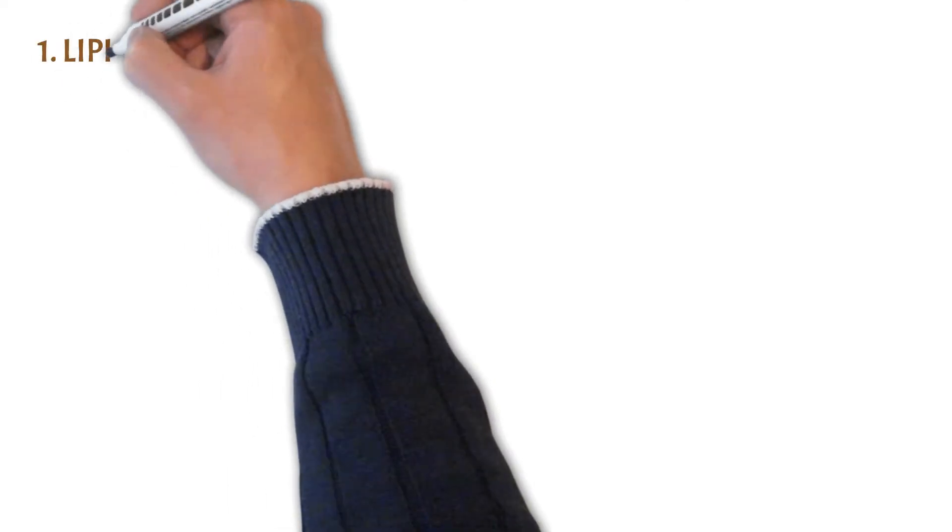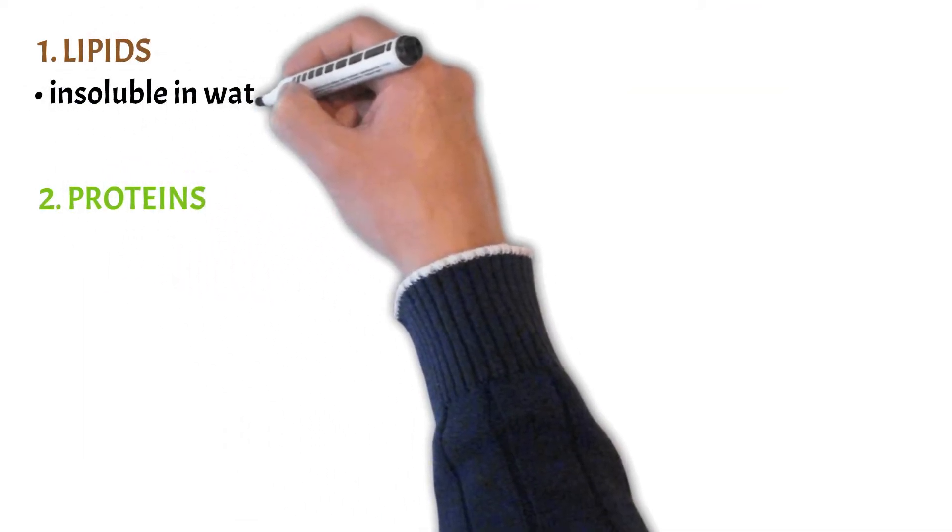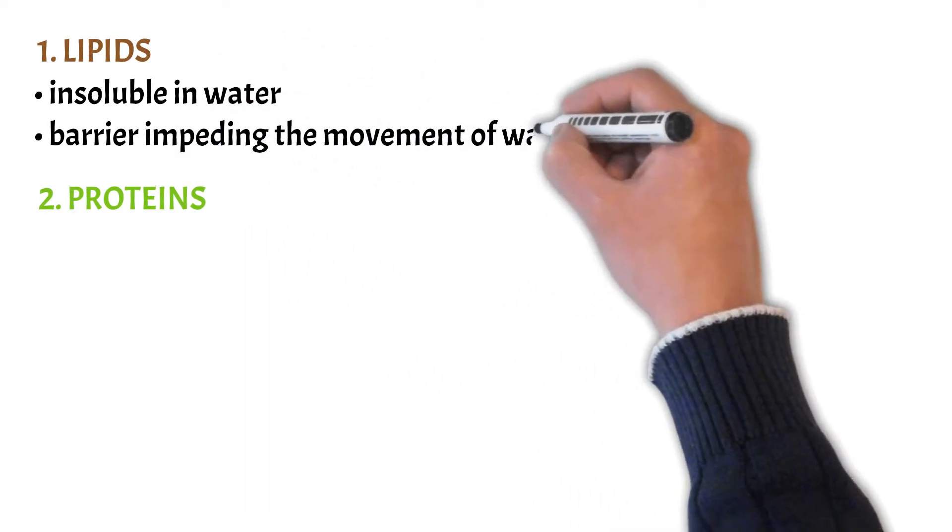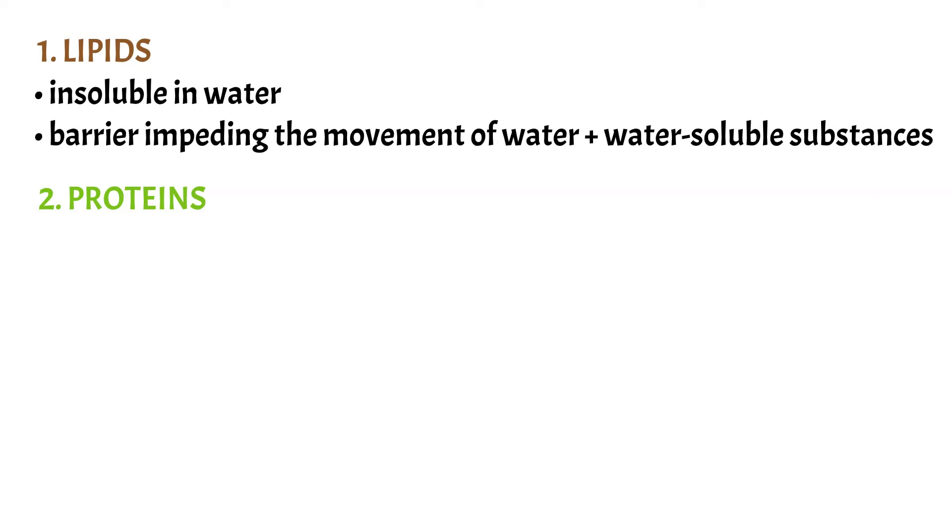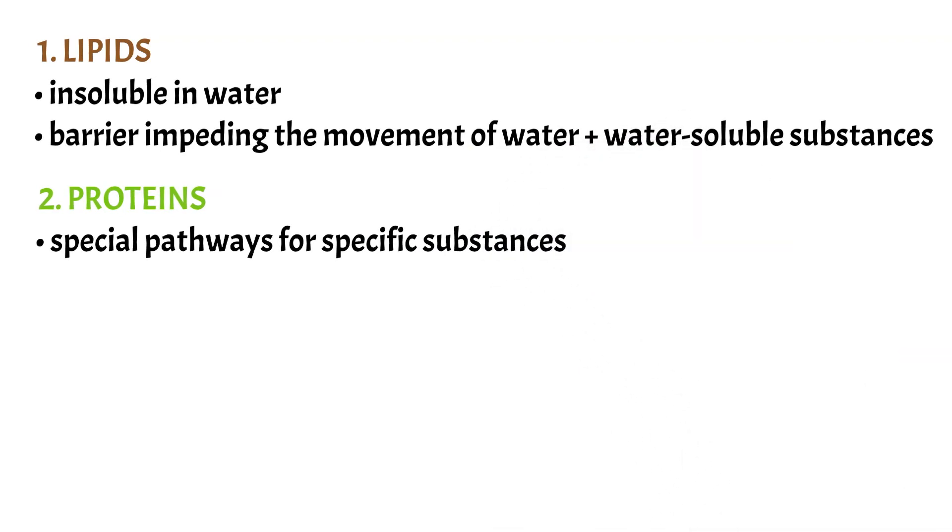The cell membrane contains two main substances: lipids and proteins. Lipids are insoluble in water so they create a barrier that impedes the movement of water and water soluble substances from one cell compartment to another. That's the reason why we have the lipid layer in the middle which is impermeable to water soluble substances such as ions or glucose. But because we want to be able to pass some substances through the membrane we have proteins that can provide specialized pathways to pass specific substances through the membrane.